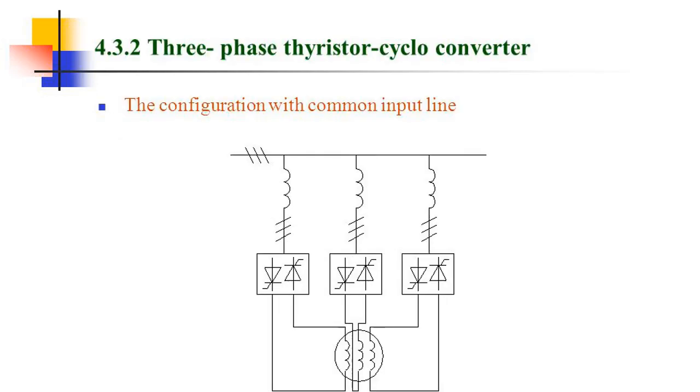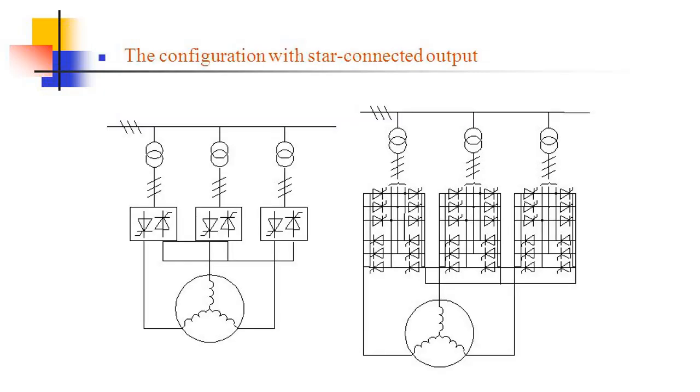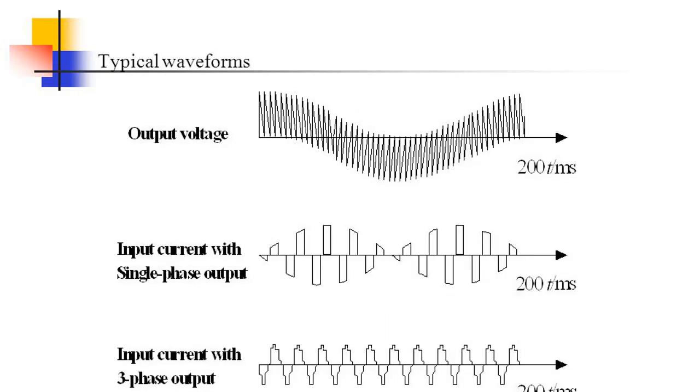4.3.2 Three Phase Thyristor Cycloconverter. The configuration with common input line, the configuration with star-connected output. Typical waveforms.